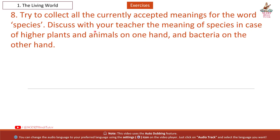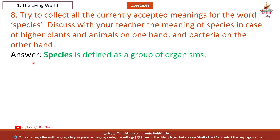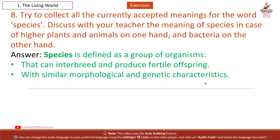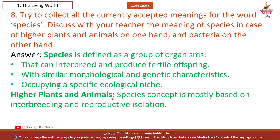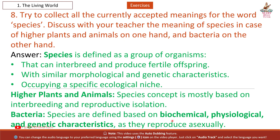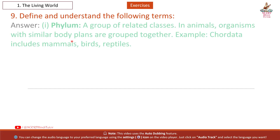Question 8: Collect all currently accepted meanings for the word 'species' and discuss the meaning in case of higher plants and animals versus bacteria. Answer: Species is defined as a group of organisms that can interbreed and produce fertile offspring, with similar morphological and genetic characteristics, occupying a specific ecological niche. For higher plants and animals, the species concept is mostly based on interbreeding and reproductive isolation. For bacteria, species are defined based on biochemical, physiological and genetic characteristics, as they reproduce asexually.